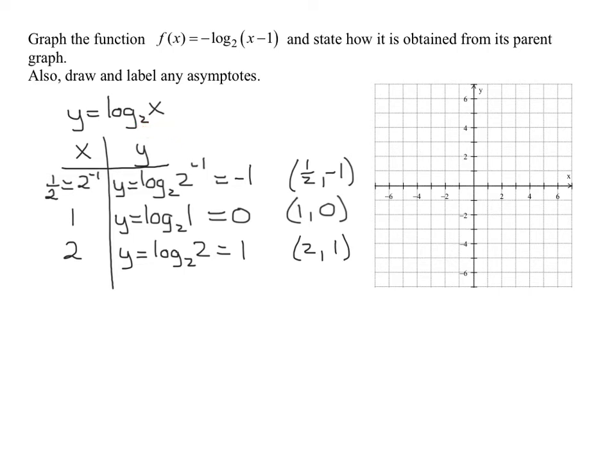So now we have to graph this function. So the first point was one half, negative 1. So one half, negative 1 is right about there. If I can get my pen to work. And 1, 0 right here. And 2, 1 here.